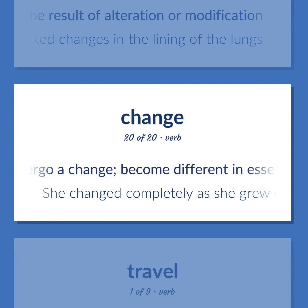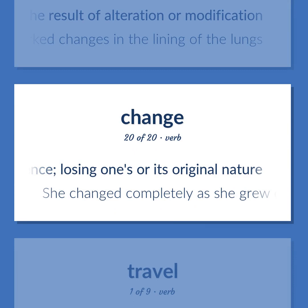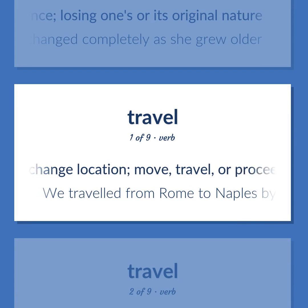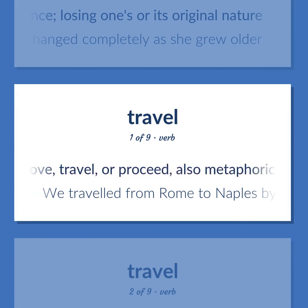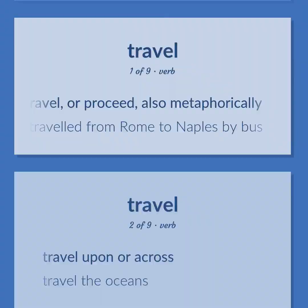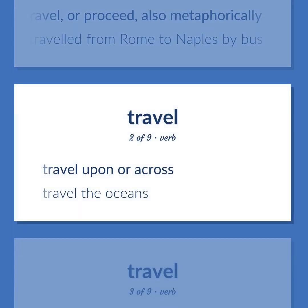Change: undergo a change; become different in essence, losing one's original nature — she changed completely as she grew older. Travel: change location; move, travel, or proceed, also metaphorically — we traveled from Rome to Naples by bus. Travel upon or across — travel the oceans.